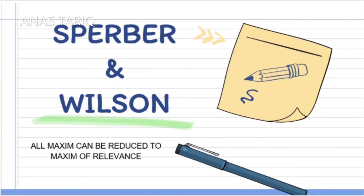Sperber and Wilson basically reduced the four maxims of the cooperative principle to only one maxim: the maxim of relevance. According to them, if you don't tell the truth and are not communicating in a relevant manner, you can't achieve the purpose of communication. So it is only relevancy which is at the back of the cooperative principle.